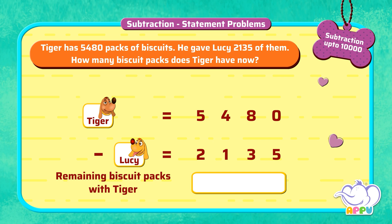To find the number of biscuit packs Tiger is left with, we have to subtract 2,135 from 5,480. That is 5,480 minus 2,135. We subtract ones first.